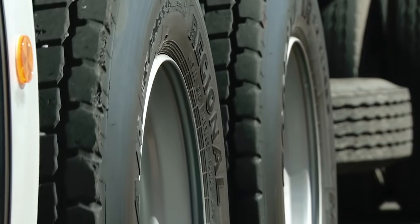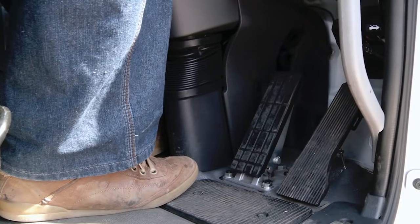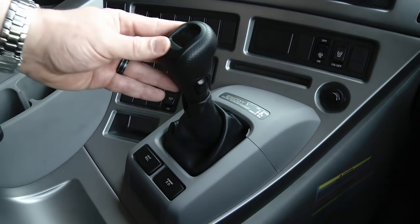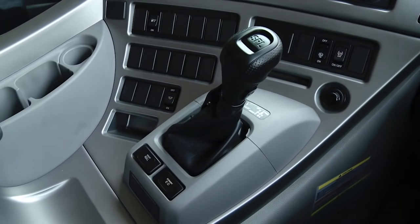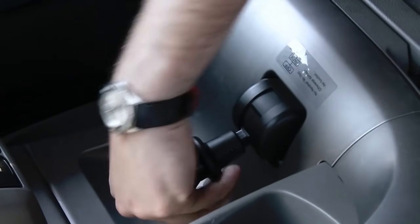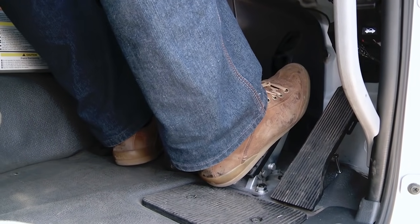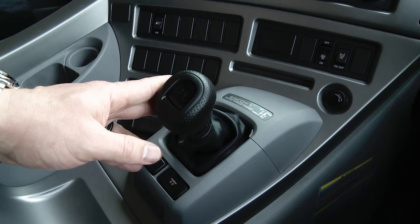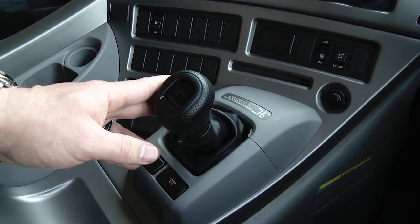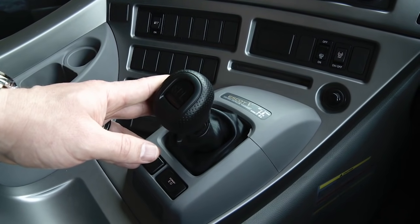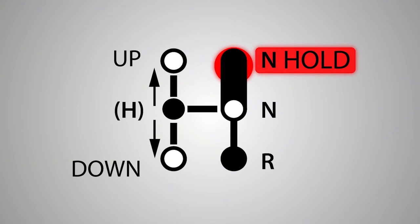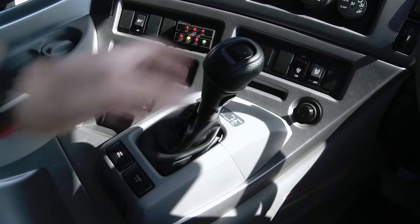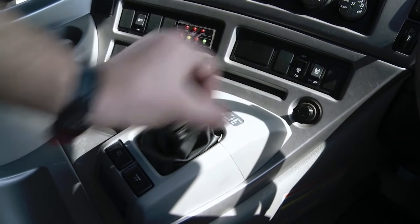When you come to an end of journey stop, depress the service brake pedal and move the gear lever into the neutral hold position. Engage the park brake and release the service brake pedal. For reverse gear engagement, follow the same procedure as above, but with the exception of moving the gear lever straight backwards from the neutral hold position into reverse.